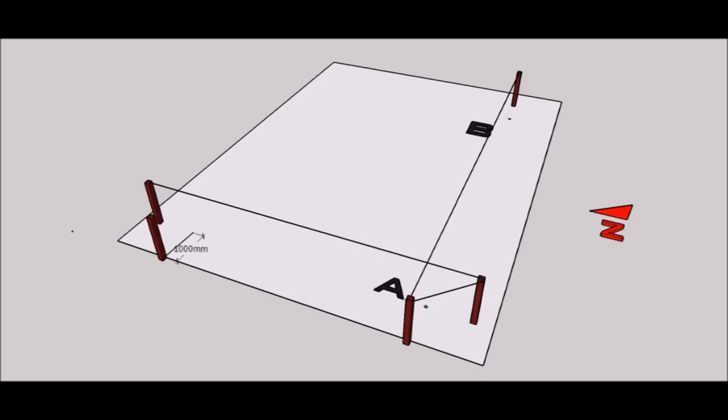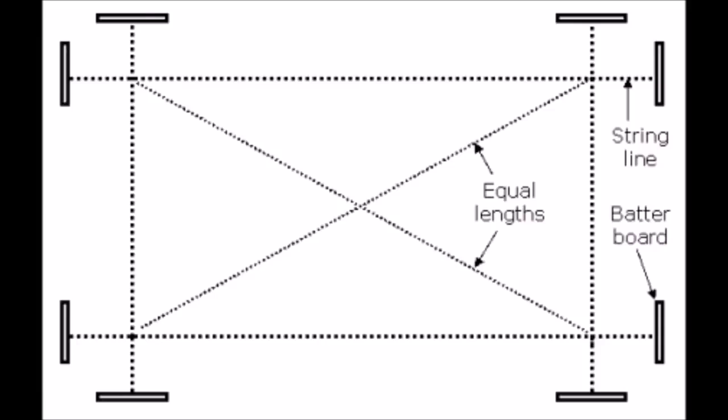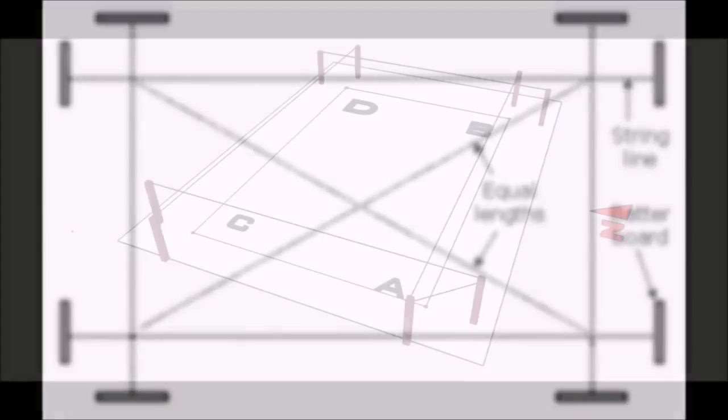Now by using Pythagoras method, locate the point D as we did at point A. Verify at the end by measuring the diagonals. Both diagonals should be same.